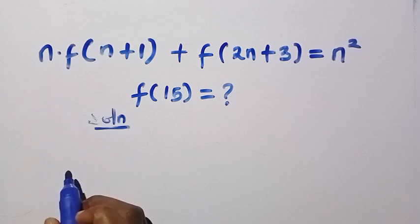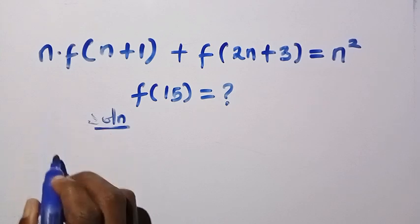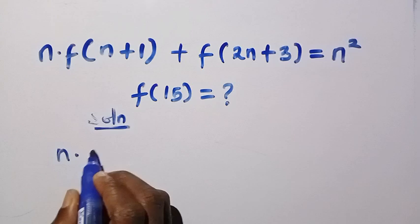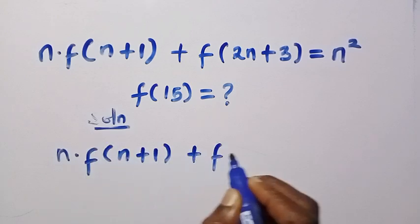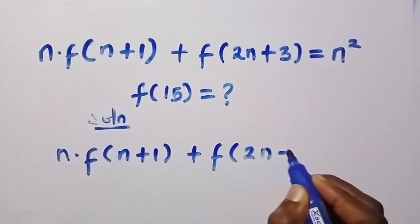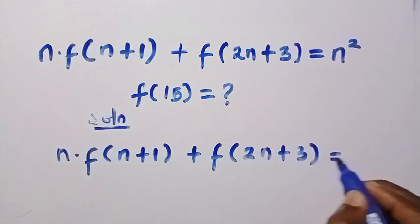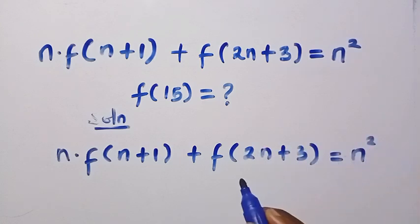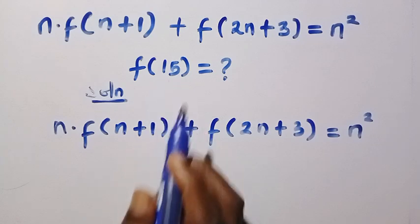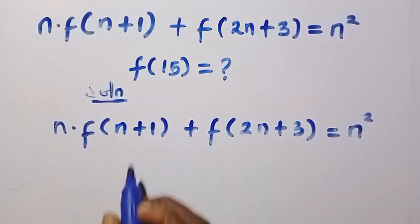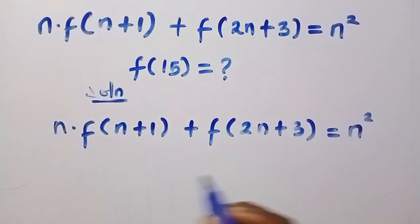Here n is a member of the real numbers. So given that n multiplied by f of n plus 1, plus f of 2n plus 3, equals n squared. For the first method I'm going to be inserting some values so that we later reach f of 15. That works for this method, and I think it is general for solving this kind of problem.